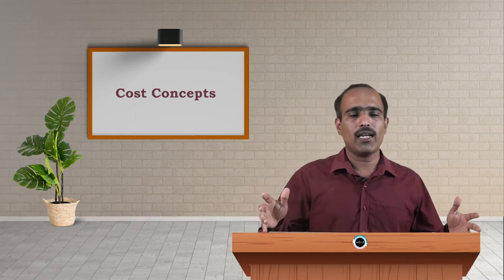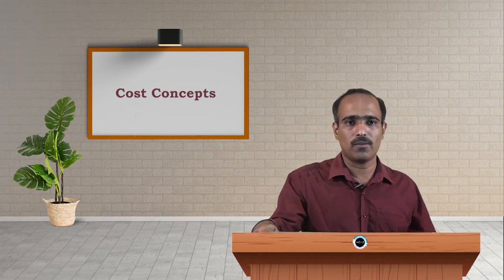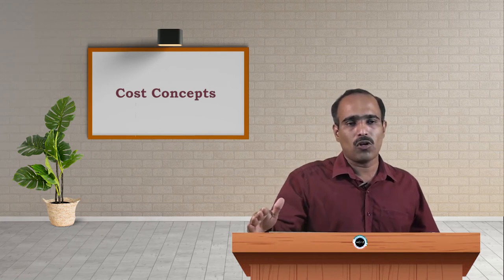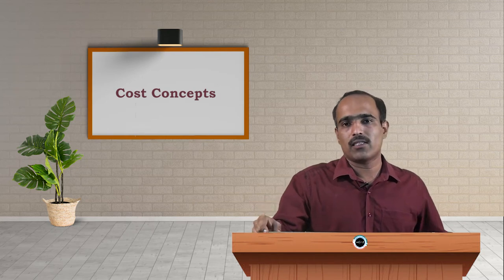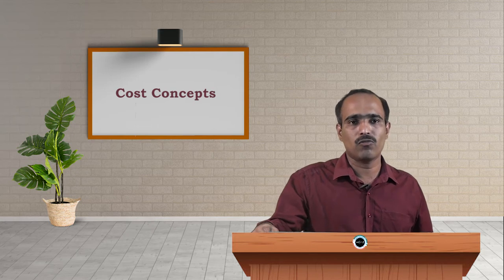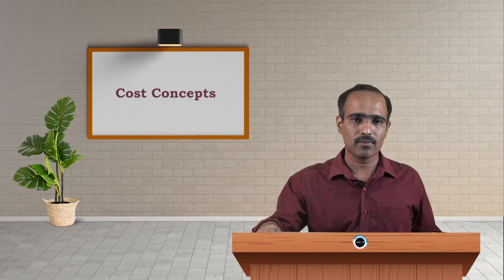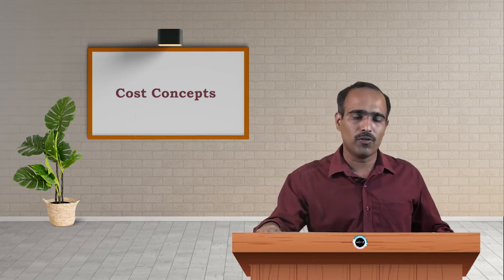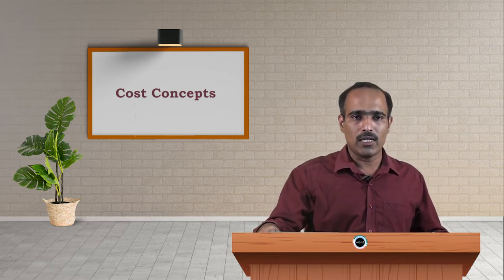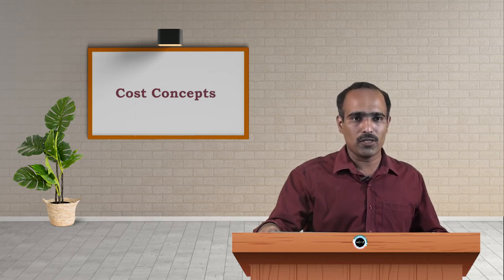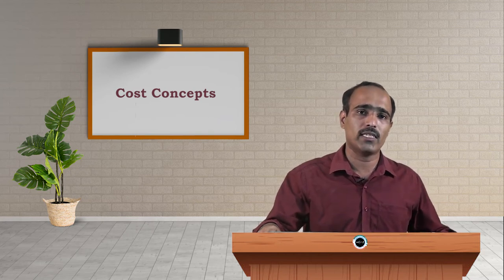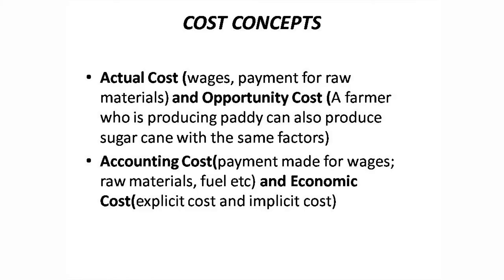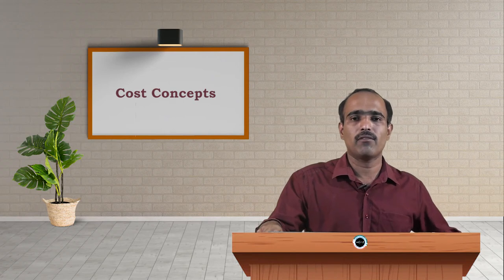We use a large number of factors of production — land, labor, capital, and organization — and these factors are common in almost all production activities. For example, if we want to produce a refrigerator, the same factors of production may also be used for producing a TV. Therefore, the opportunity cost of producing the refrigerator is the television that is foregone. Similarly, a farmer who wants to produce paddy but is also interested in producing sugarcane — if he chooses paddy, he must sacrifice sugarcane, and vice versa. The factors of production remain the same.